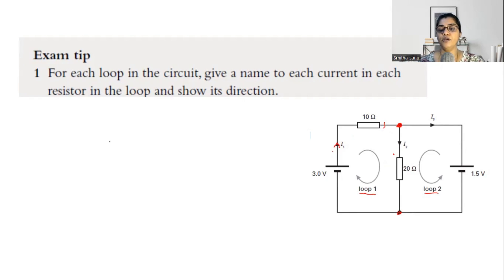The current flowing through the 1.5 volt battery is again a separate current — let it be I3. I have given the direction like this; it's your choice to give the direction. The only difference would be that a negative answer would come for the electric current.